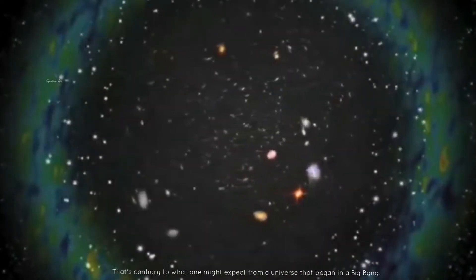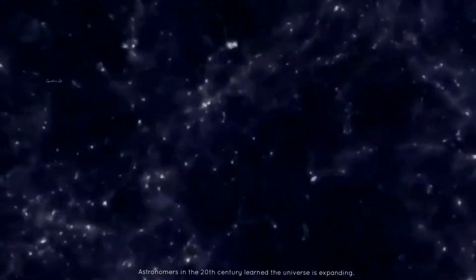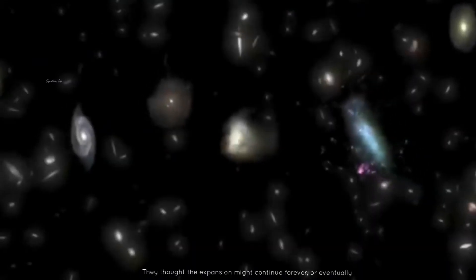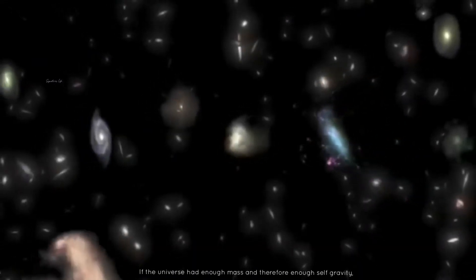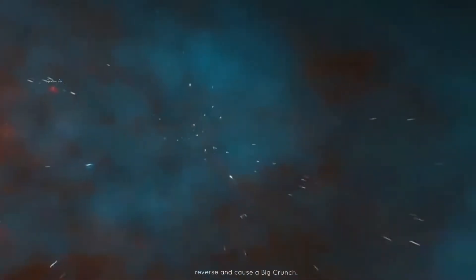Astronomers in the 20th century learned the universe is expanding. They thought the expansion might continue forever or eventually, if the universe had enough mass and therefore enough self-gravity, reverse and cause a Big Crunch.